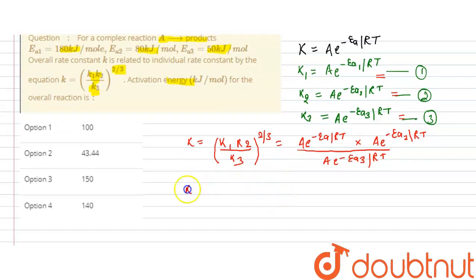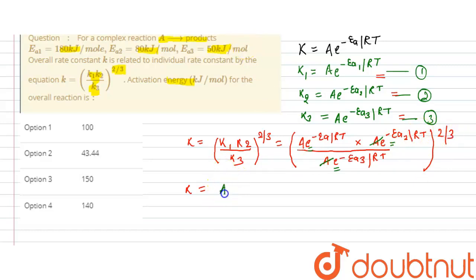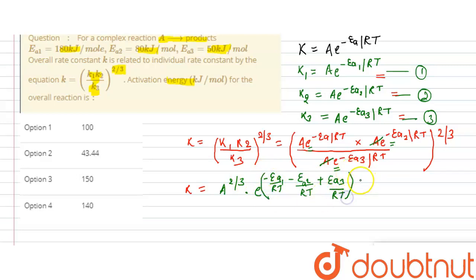From this equation it is clear that the A terms will cancel — the denominator A and the numerator A cancel out. Since we have the same base e in both numerator and denominator, we can combine the exponents. This gives us e raised to the power (−Ea1/RT − Ea2/RT + Ea3/RT), all raised to the power 2/3.